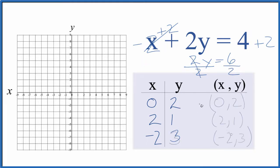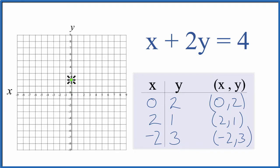So these are the points we'll graph for x plus 2y equals 4. Let's get 0, 2, 0, and then 2. We've got 2, 1. So x is 2. We go up 1.